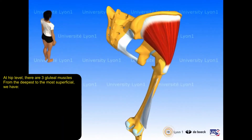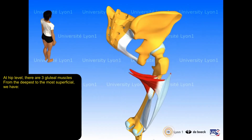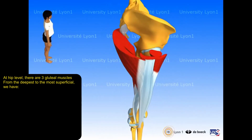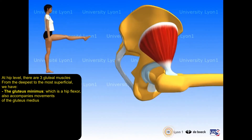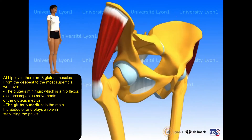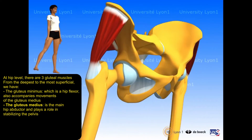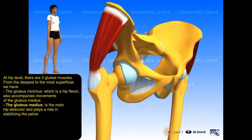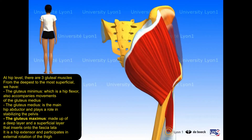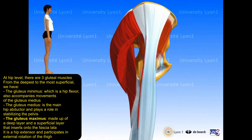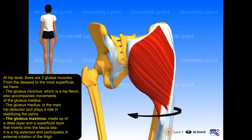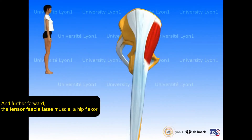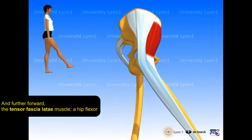At hip level, there are three gluteal muscles. From deepest to most superficial: the gluteus minimus, which is a hip flexor and accompanies movements of the gluteus medius. The gluteus medius is the main hip abductor and plays a role in stabilizing the pelvis. The gluteus maximus, made up of a deep and superficial layer, is a hip extensor and participates in external rotation of the thigh. And further forward, the tensor fasciae latae muscle, a hip flexor.